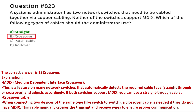MDI-X, Medium Dependent Interface Crossover, is a feature on many network switches that automatically detects the required cable type — straight-through or crossover — and adjusts accordingly. If both switches support MDI-X, you can use a straight-through cable. When connecting two devices of the same type like switch to switch, a crossover cable is needed if they do not have MDI-X, as this cable manually crosses the transmit and receive wires to ensure proper communication. That's why the correct answer is B, crossover.